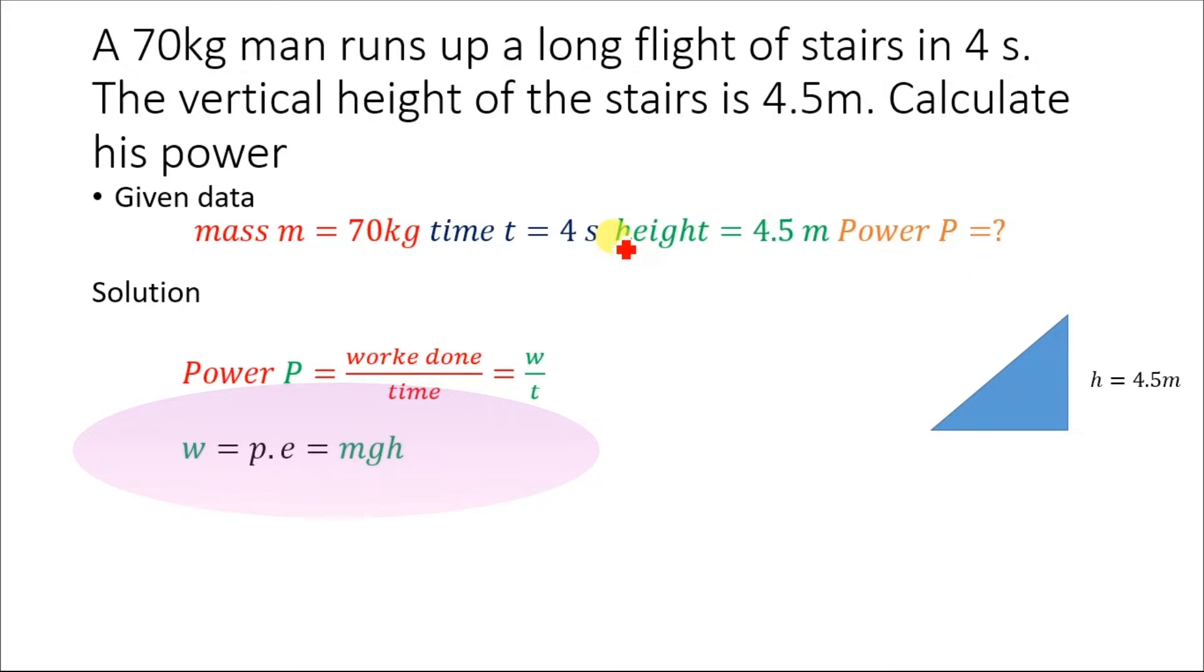So we have the work done equal to potential energy. And the potential energy we know is mgh—mass times gravitational acceleration times height.